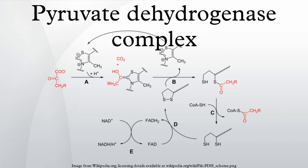Up to 6 E1 or E3 molecules can associate with the E2 core from Gram-positive bacteria, and binding is mutually exclusive. In eukaryotes, E1 is specifically bound by E2, while E3 associates with E3BP. It is thought that up to 30 E1 and 6 E3 enzymes are present, although the exact number of molecules can vary in vivo and often reflects the metabolic requirements of the tissue in question.